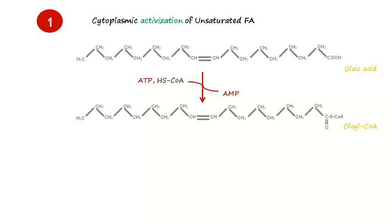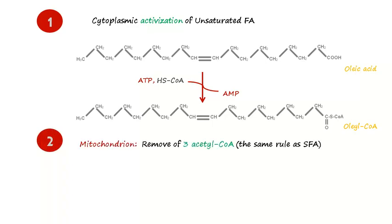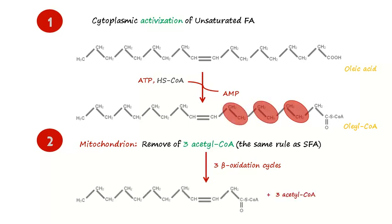In the second step, the activated fatty acid will travel towards the mitochondrion to undergo the oxidation. The free double bond chain will get shorter by undergoing three normal cycles of beta-oxidation and release three molecules of acetyl-CoA. The substance created will be named delta-3-cis-enoyl-CoA.